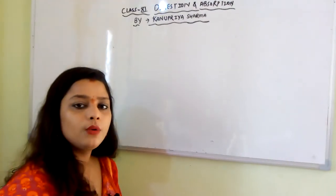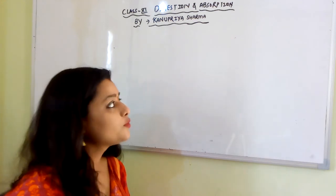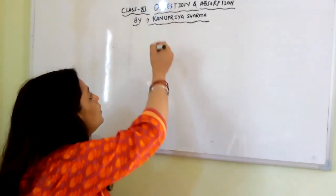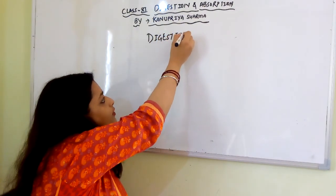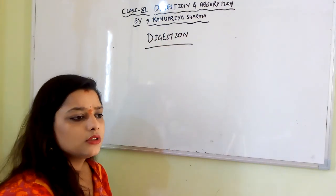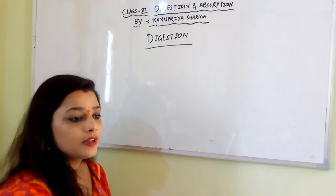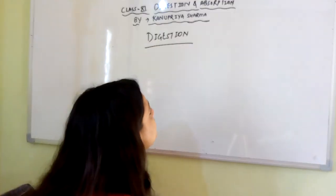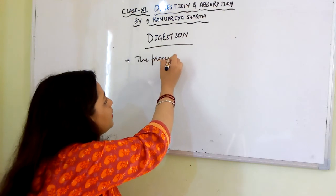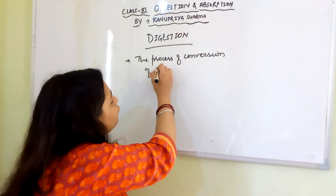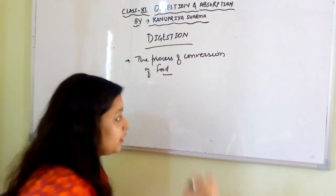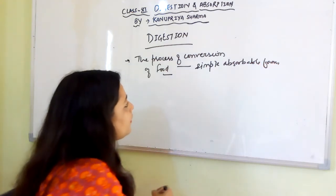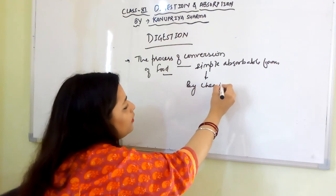Today we will be studying the chapter digestion and absorption and first we'll try to understand the basics of digestion and the organs involved. Digestion is the process of conversion of food that you eat into simple absorbable form by chemical and mechanical process.